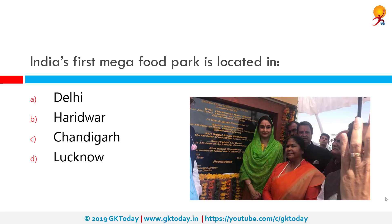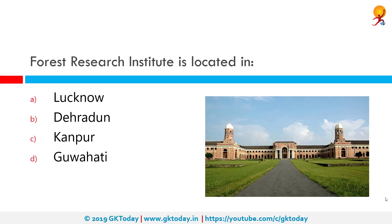India's first mega food park is located in Haridwar. The government has sanctioned 42 mega food parks to be set up in the country under the mega food park scheme. The Forest Research Institute is located in Dehradun. It is an institute of the Indian Council of Forestry Research and Education and is a premier institution in the field of forestry research in India. It is among the oldest institutions of its kind, and in 1991, it was declared a deemed university by the University Grants Commission.